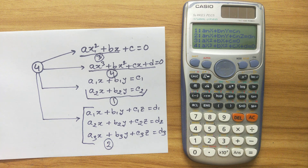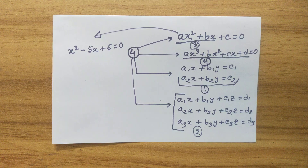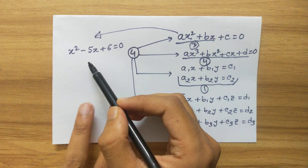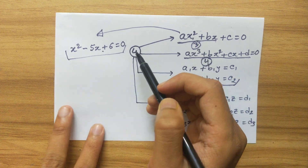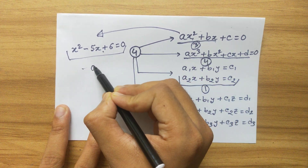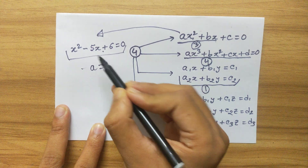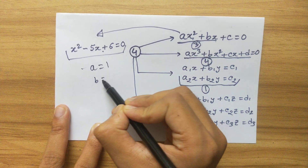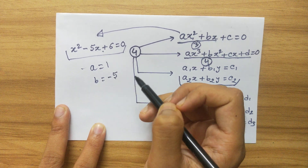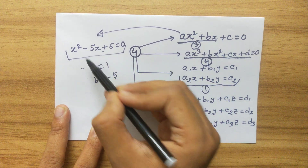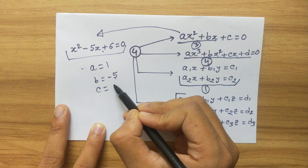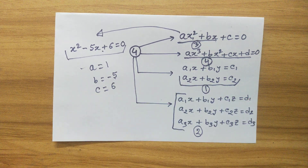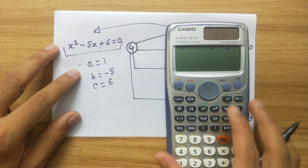Let's start with an example of the quadratic type. Comparing our example equation with AX squared plus BX plus C equals 0, we can find the value of A is 1, the value of B is minus 5 — remember to include the minus sign — and the value of C is 6.